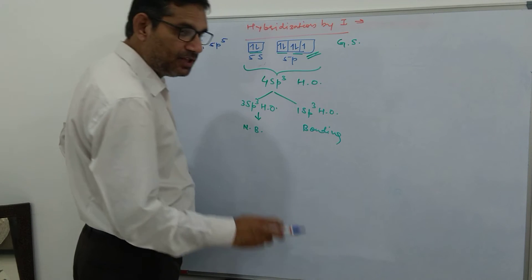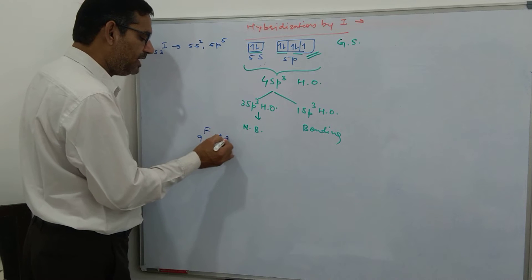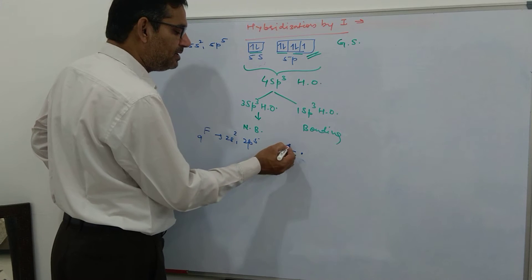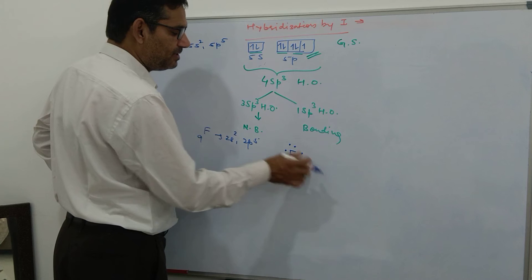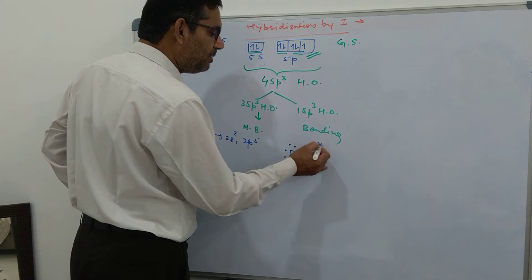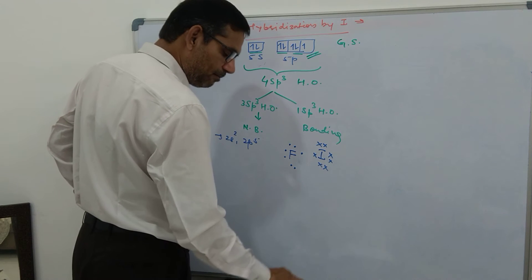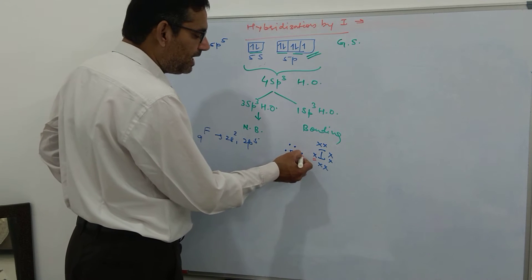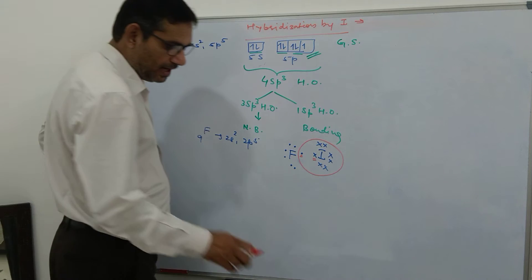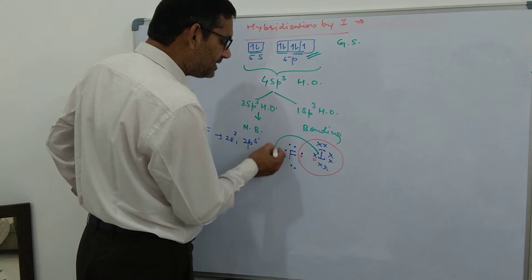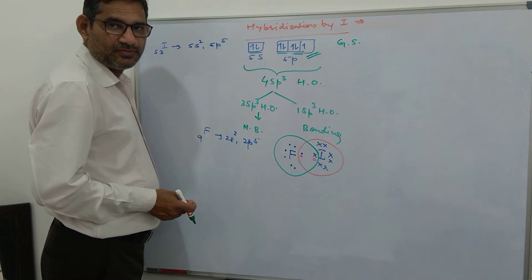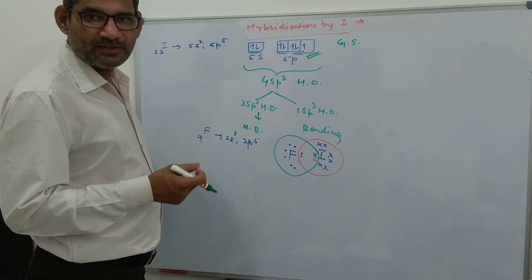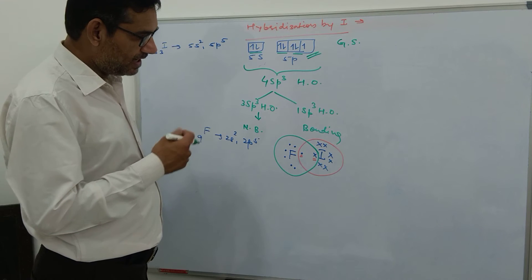Fluorine has a 2s² 2p⁵ configuration with only one unpaired electron, the rest 6 are paired. Iodine also has only one unpaired electron and the rest 6 are paired electrons. In this way, the one unpaired electron of iodine combines with the one unpaired electron of fluorine to form IF. Both species will attain stability with paired electrons.